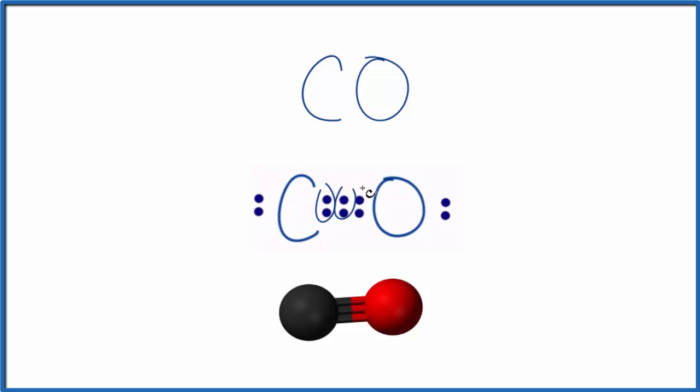This has one, two, three pairs of electrons shared. That makes this a triple bond. So it's a covalent bond, has a triple bond, and we say that carbon monoxide is covalent or molecular.